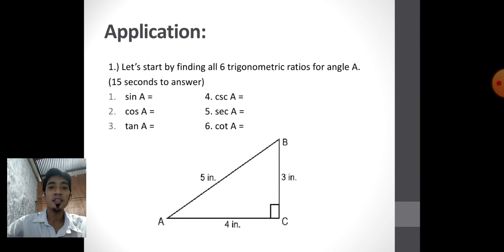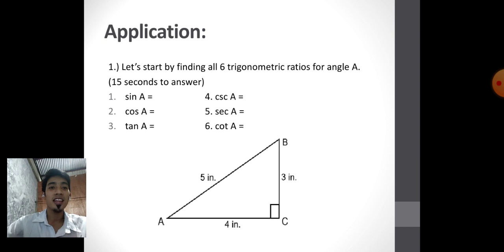Let's apply what we learned. Let's start by finding all six trigonometric ratios for angle A: sine A, cosine A, tangent A, cosecant A, secant A, and cotangent A. Use the triangle below. Fifteen seconds to answer.